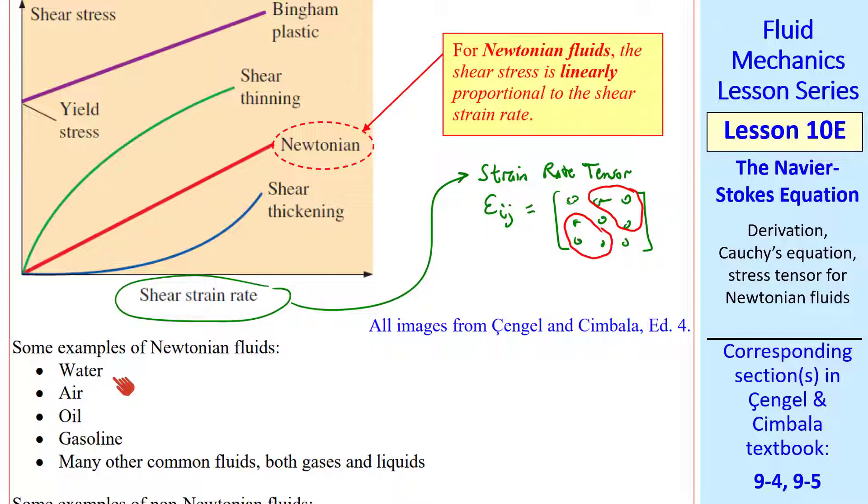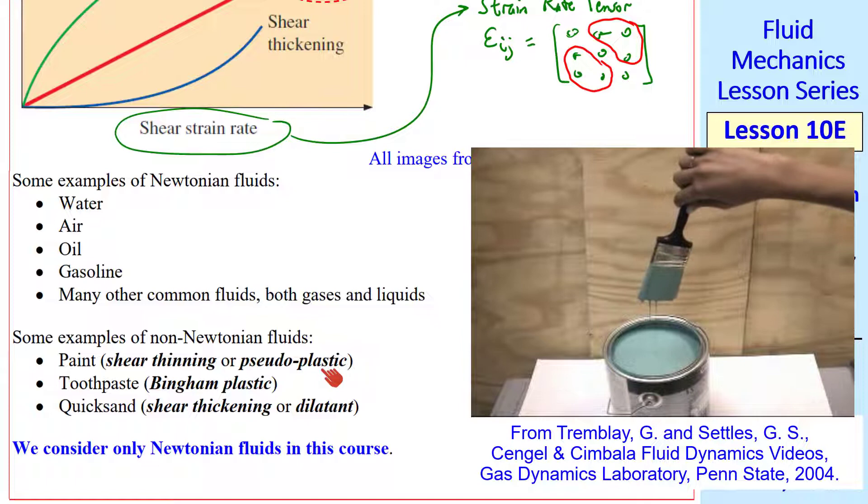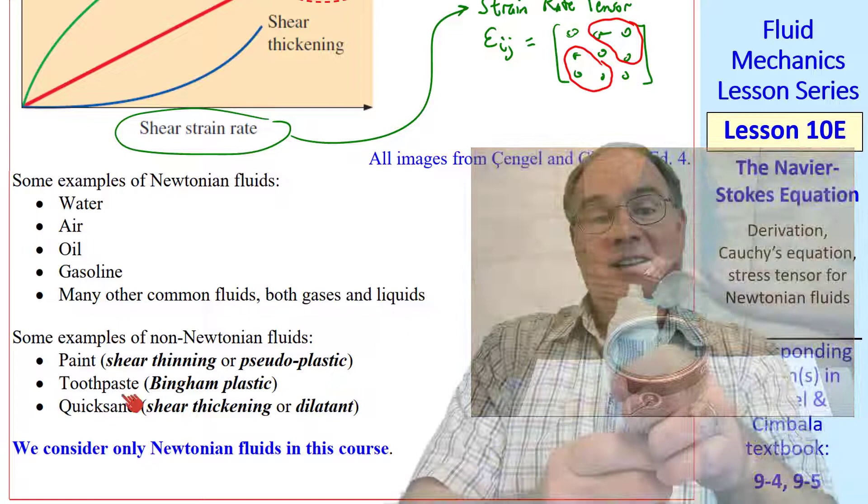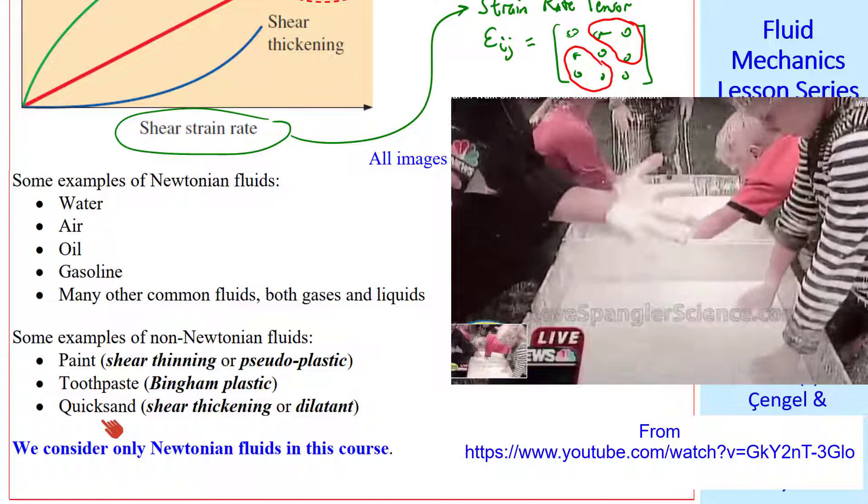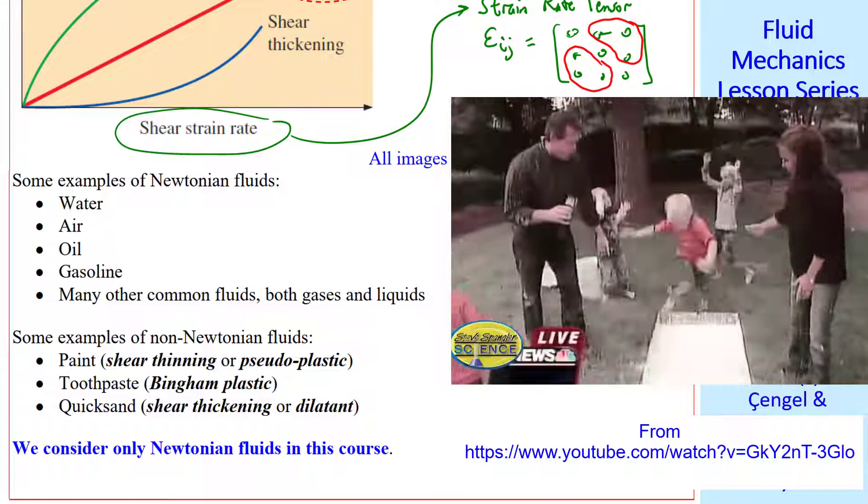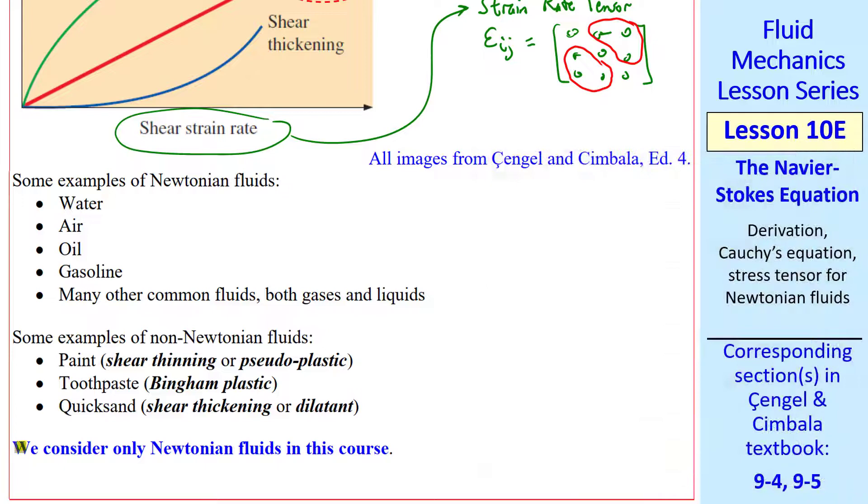Here are some examples of Newtonian fluids. Water, air, oil, gasoline, and many other common fluids, both liquids and gases. Here are some examples of non-Newtonian fluids. Paint, which is shear thinning or pseudoplastic. It's viscous enough to stick to the brush because the applied shear stress is small, but its viscosity drops dramatically as it's sheared, so we can apply it to a wall in a thin coating. Toothpaste, which as I mentioned is Bingham plastic, and quicksand, which is shear thickening, also called dilatant. You can make a shear thickening fluid like quicksand by mixing water and cornstarch. You may have seen videos of people running across water. It's actually a mixture of water and cornstarch, a shear thickening fluid. You can even hammer a shear thickening fluid.